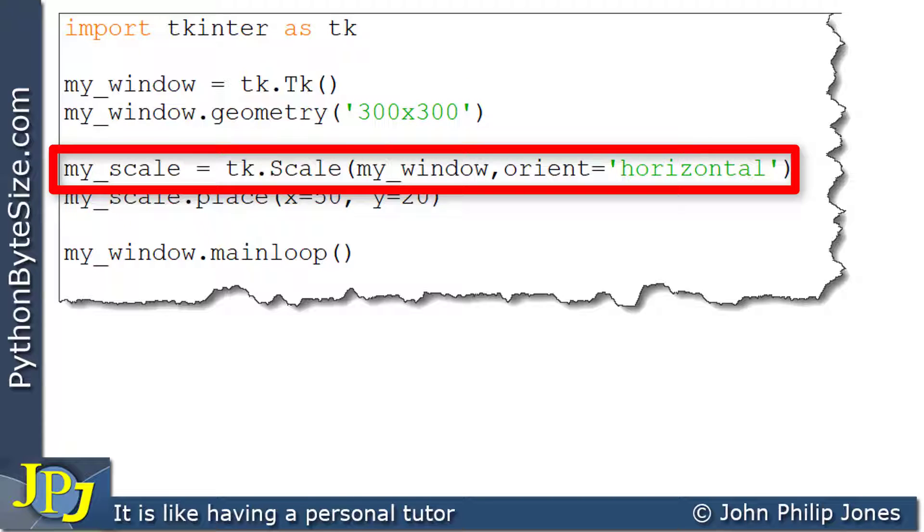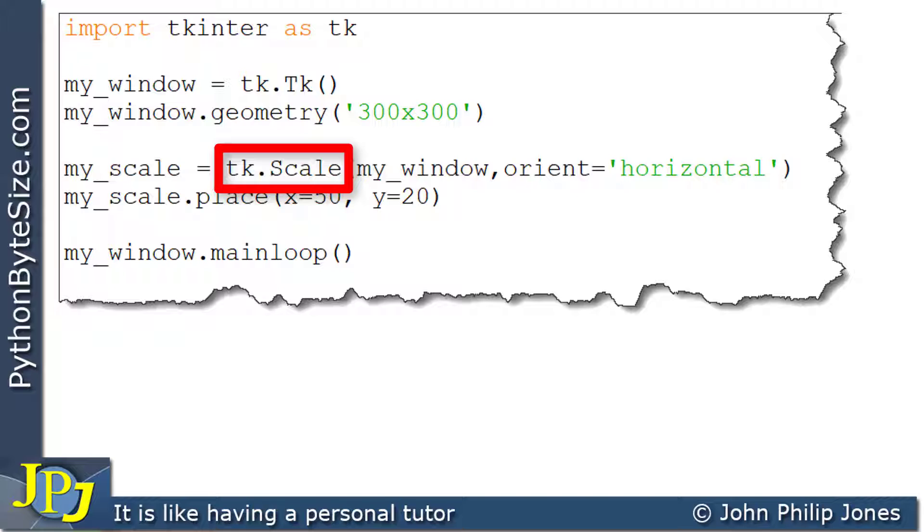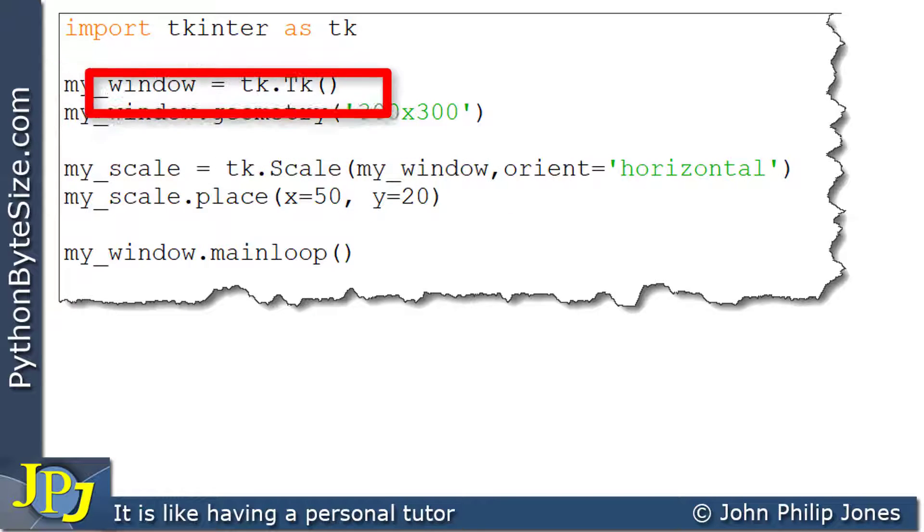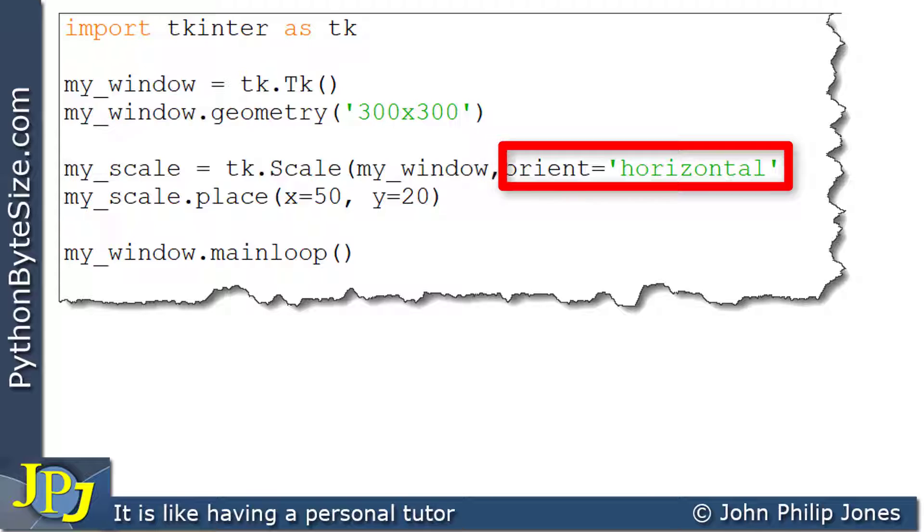This program statement will create a scale widget where this name is bound to the scale widget that's associated with this window that was created on this line. You can see we make the orient equal to horizontal, so this statement will give us a horizontal scale widget.